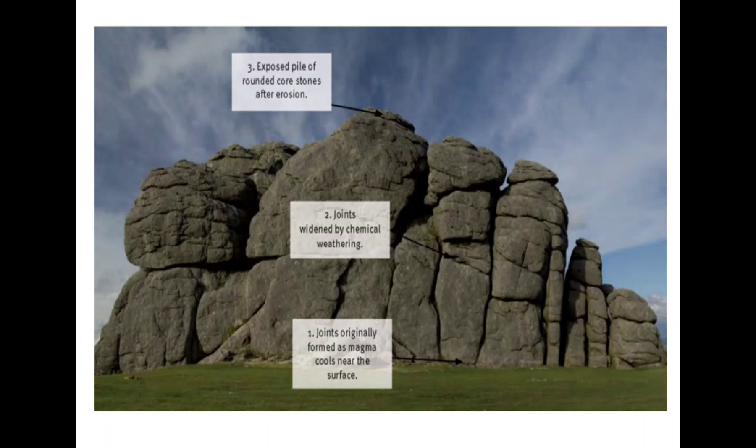When tors appear at the surface they look very interesting. Tors attract tourists. They are exposed piles of rounded core stones after erosion has occurred. Joints originally formed as magma cools near the surface, then the joints are widened by chemical weathering — that is how tors are formed. I hope you have enjoyed today's lesson. Please don't forget to like and subscribe to my YouTube channel.